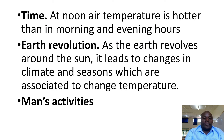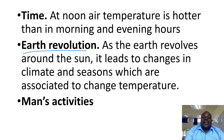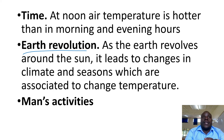We have time. At noon, air temperature is hotter than in the morning and evening hours because at noon the sun is overhead. Then we have Earth's revolution. As the earth revolves around the sun, it leads to changes in climate and seasons, which are associated with changes in temperature. Seasons have a great influence on temperature. In the wet season and dry season, temperatures are not the same — in the dry season temperatures are high, and in the wet season temperatures are low.